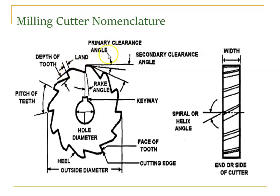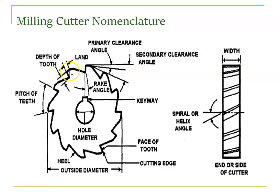We provide the clearance angle so chips can be removed. The first slope gives the primary clearance angle. Sometimes we have another slope after the primary clearance — that second slope is called the secondary clearance angle. If you draw the outside diameter circle, the land makes some angular deviation: the first slope is the primary clearance angle and the next slope is the secondary clearance angle.